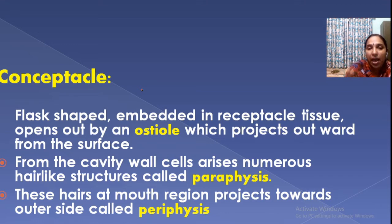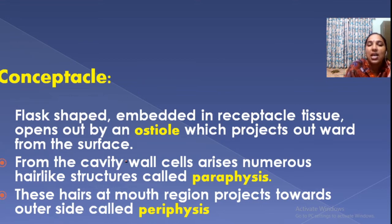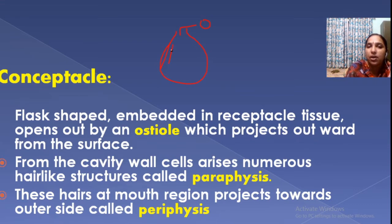From the cavity inside, there are numerous hairs called paraphyses. You studied these hairs in the cryptoblast as well. Hairs at the mouth of the conceptacle are known as periphyses. So there are two types of hairs: paraphyses inside the cavity and periphyses at the opening region — the mouth.